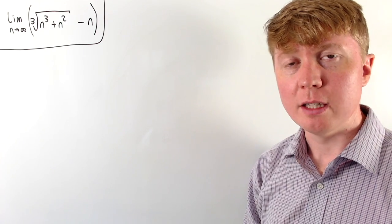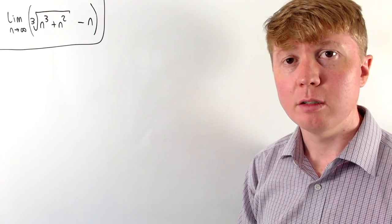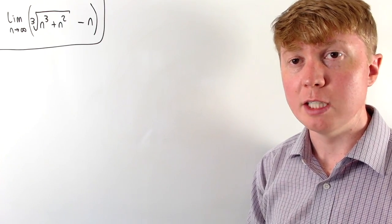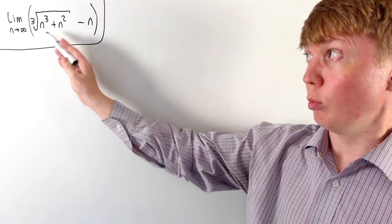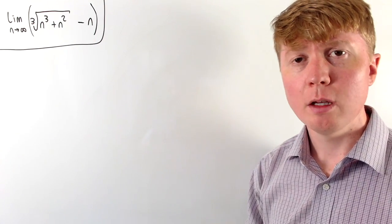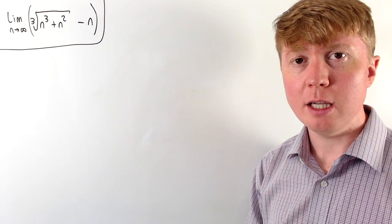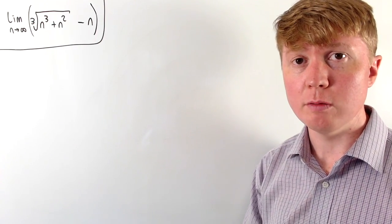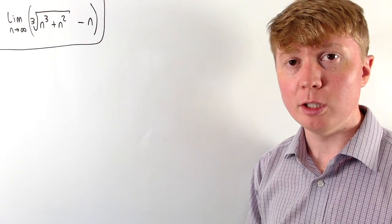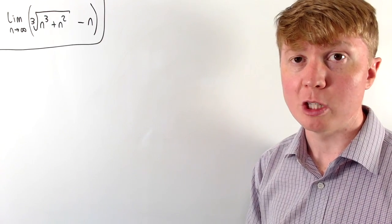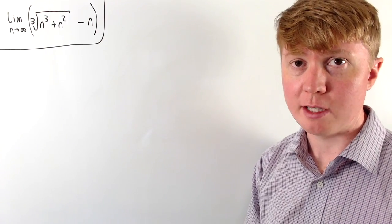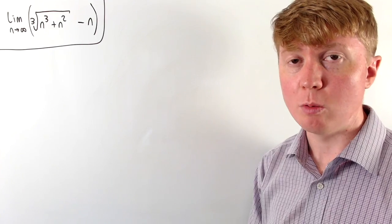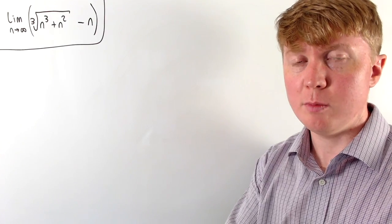We're going to evaluate this limit, and the difficult part is going to be dealing with this cube root term. But before we get to that, we'll build up by considering what would happen if we had a similar looking limit with a square root instead of a cube root, so we can see where this method comes from.